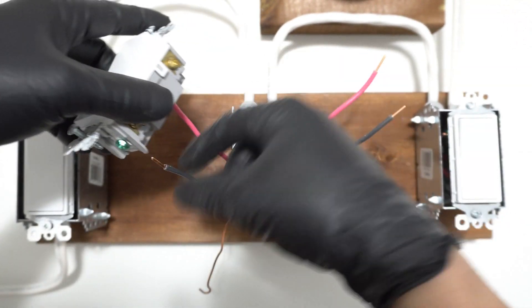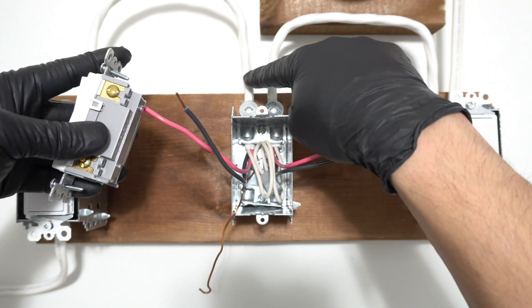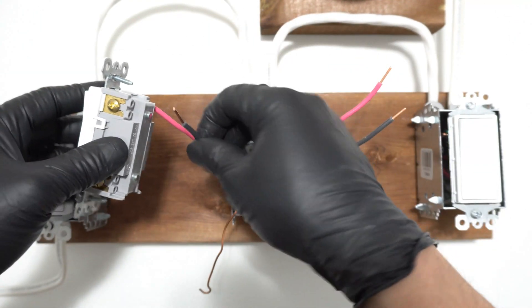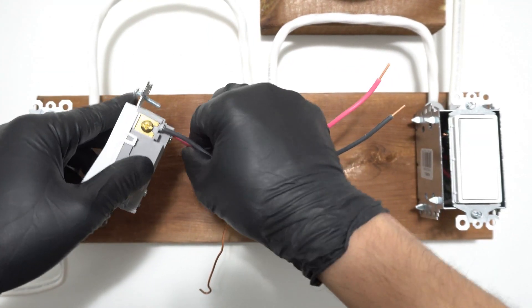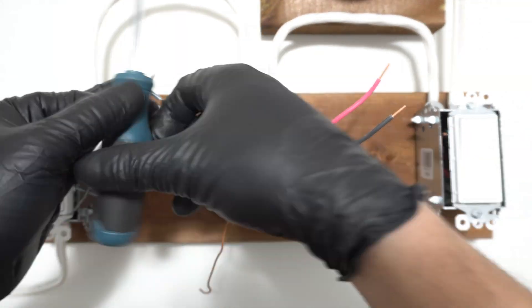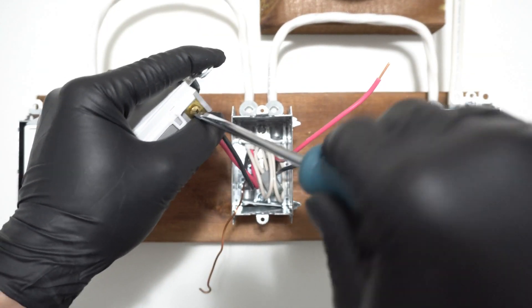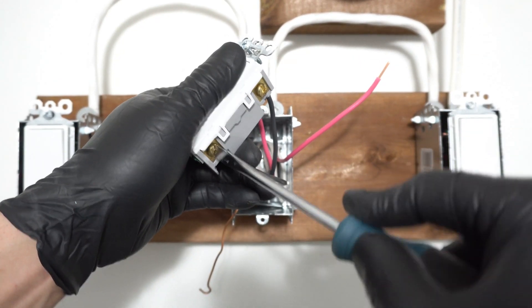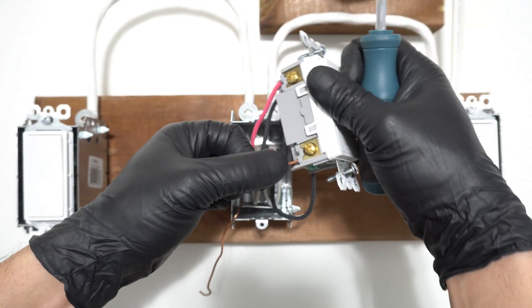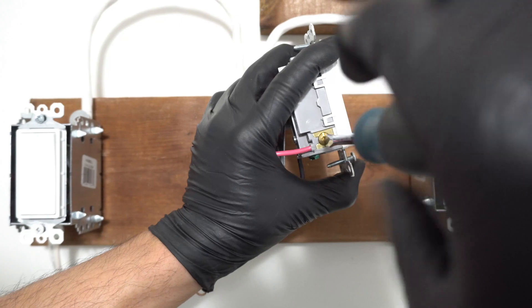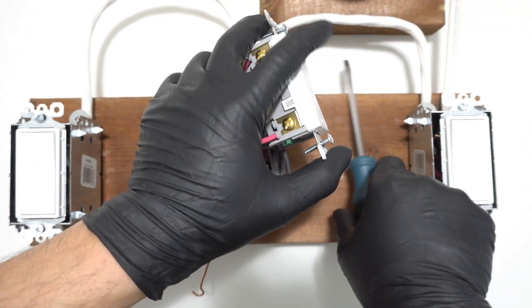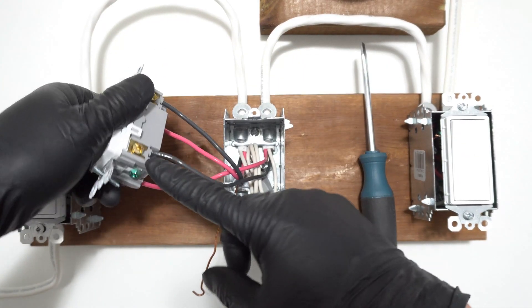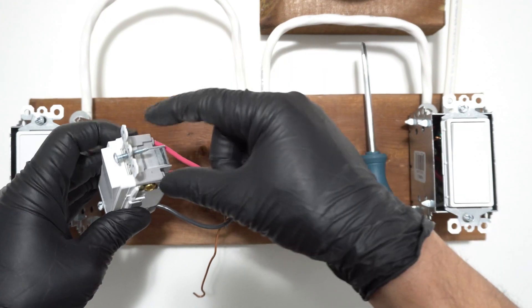And another important thing is that this set of wires has to be on the output or the top set of the terminals. You cannot mix and match. You cannot put it at the bottom. Now the bottom set. The last wire and last red on the bottom. So remember that this wire set is on this bottom two and this 14-3 is for this top two.